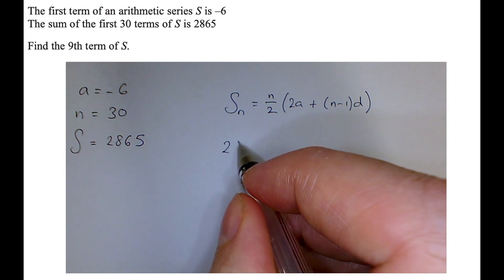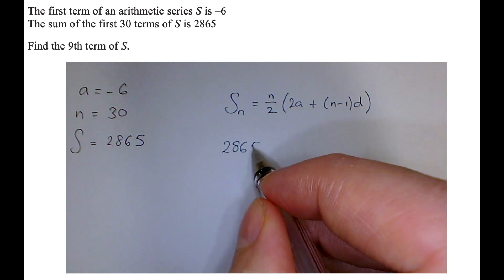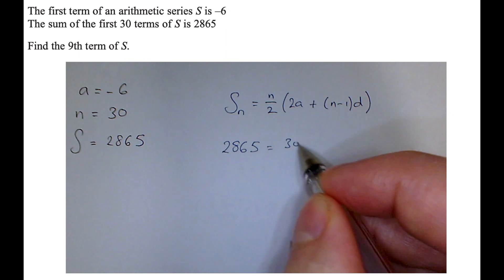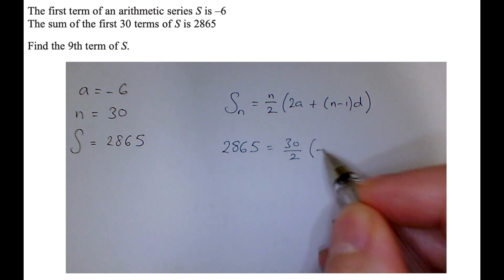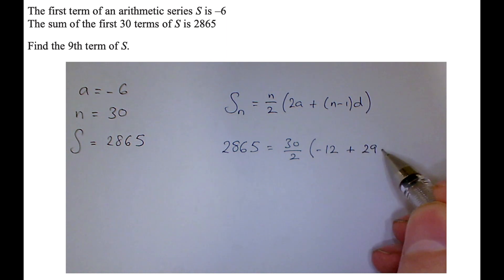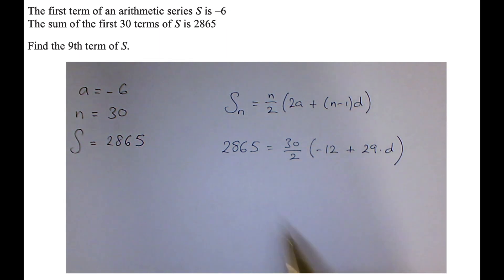So that's 2,865 is equal to the number of terms, which is 30, divided by 2, times by twice the first term, which is minus 12, plus 29 of the common difference, what I'm adding on each time.